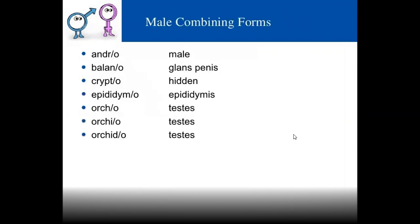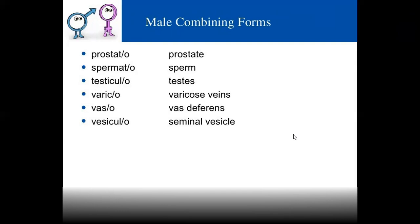Combining forms: andro means male, androgen means male-producing. Balano refers to glans penis. Crypto means hidden. Epididymos refers to epididymis. Orco and orchid both refer to testes. Prostato refers to prostate. Spermato refers to sperm. Testiculo refers to testes. Varico refers to varicose veins. Vaso refers to vas deferens.